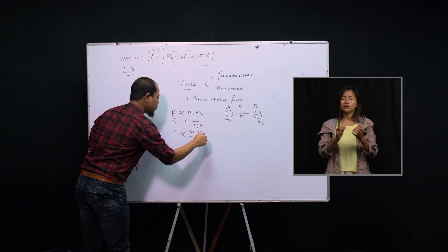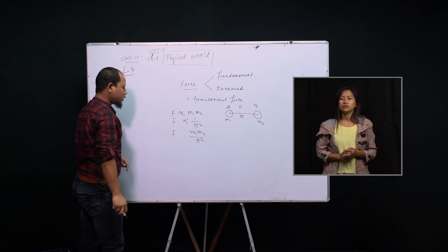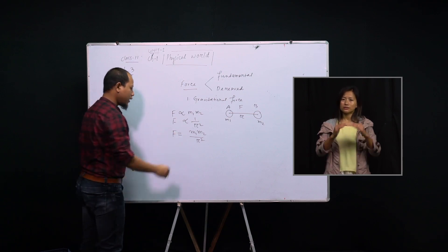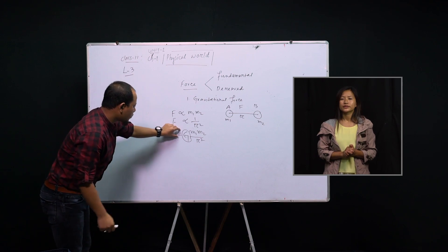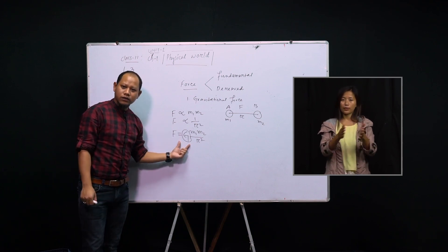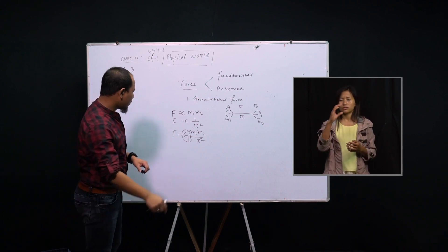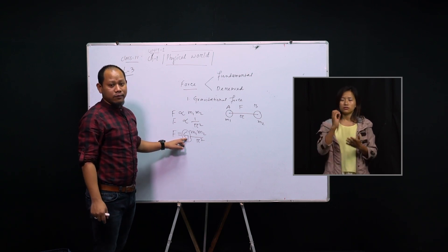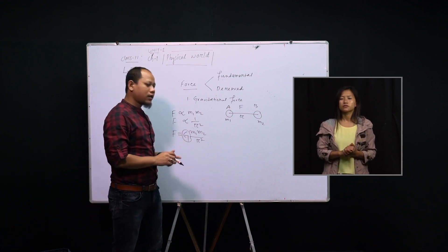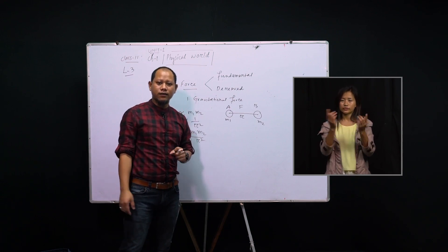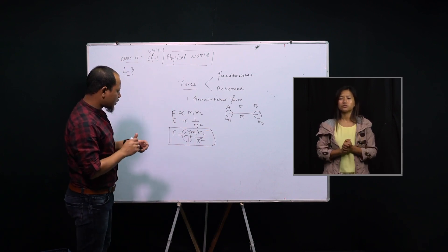Combining the two proportionality relations: F is proportional to m₁m₂ divided by r². Removing the proportionality sign and putting equal, we introduce a constant G — the gravitational constant, also called the universal gravitational constant. This is the equation for the law of gravitation, by which we can understand the attraction between any two bodies.